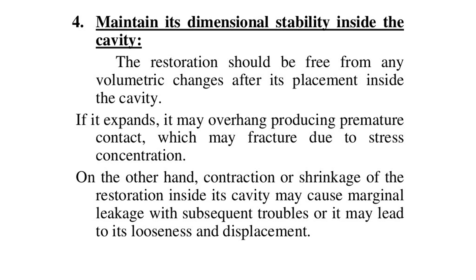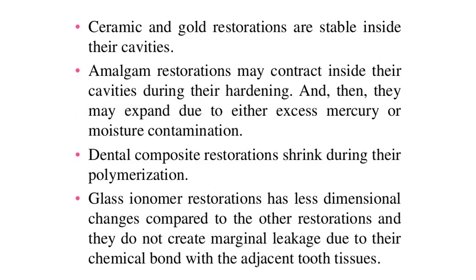Ceramic and gold restorations are dimensionally stable inside their cavities. Amalgam restorations may contract inside their cavities during hardening, and then may expand due to either excess mercury or moisture contamination. Dental composite restorations shrink during polymerization. Glass ionomer restorations have less dimensional change compared to other restorations and do not create marginal leakage due to their chemical bond with adjacent tooth tissues.